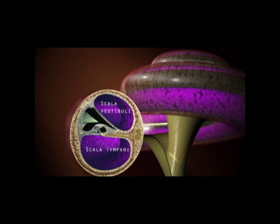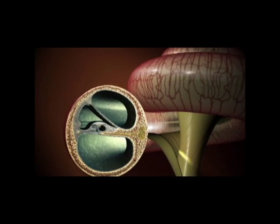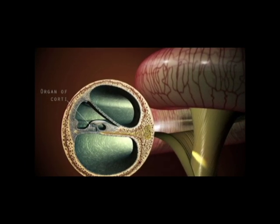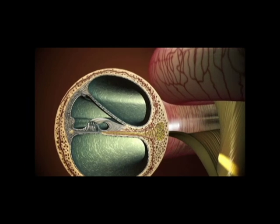The scala media contains the organ of Corti, which is responsible for transmitting sound impulses to fibers of the cochlear nerve.